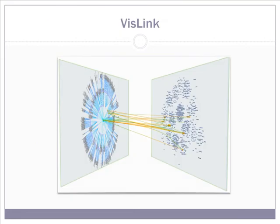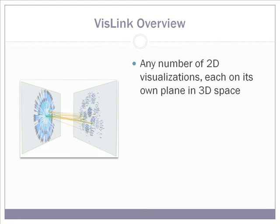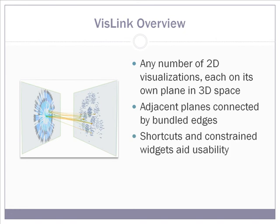This is the VisLink visualization, in which any number of 2D visualizations are placed on planes which float in a 3D space. Adjacent planes are connected by 3D bundled edges. Shortcuts and constrained widgets add usability and enable powerful inter-visualization queries.